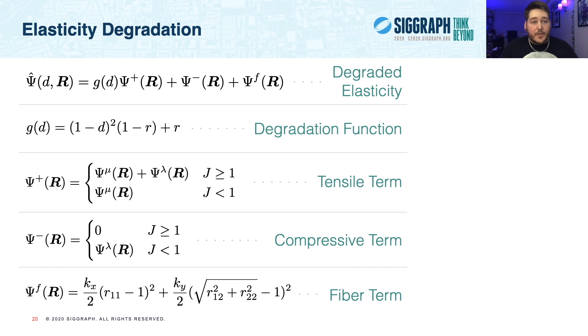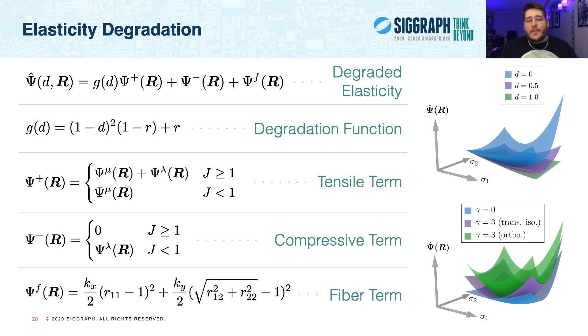So, the tensile portion always contains the shear term, and only contains the volumetric term when we have an increase in volume, indicated by J greater than or equal to 1. Naturally, the compressive term then is either 0 for volume increase, or the volumetric term for volume decrease. And recall that we only want to weaken the tensile contribution to the overall energy to allow for material fracture. So this means that we always weaken the shear term, only weaken the volumetric term for volume increase, and never weaken the fiber term. Finally, at right, we present some graphs of our anisotropic elasticity. Notice in the top chart that as damage increases from 0 to 1, the overall energy density decreases symmetrically. And in the bottom right, we show the effects of fiber scaling on the energy. Notice here the asymmetry of the transversely isotropic scaling compared with that of the orthotropic scaling.